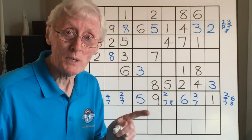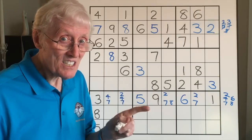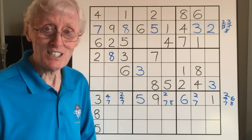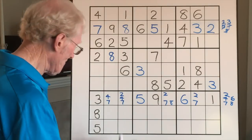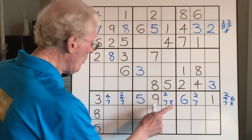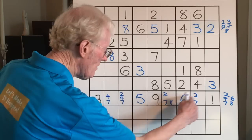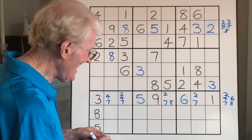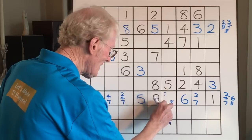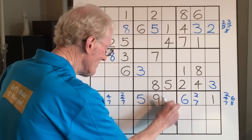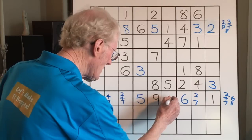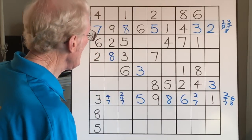Looking at the little numbers — I see there's only one 8 in that whole row of little numbers. If that's the case, you've got yourself a big 8, because that's the only place an 8 can go. So we're making progress again — the 8 goes there.